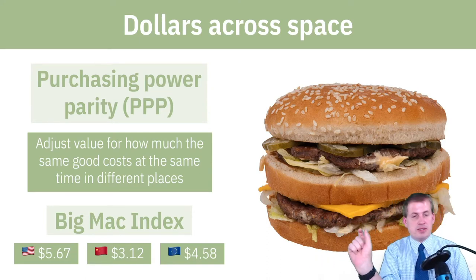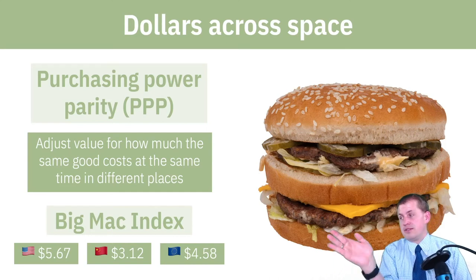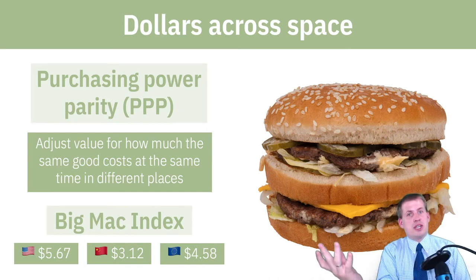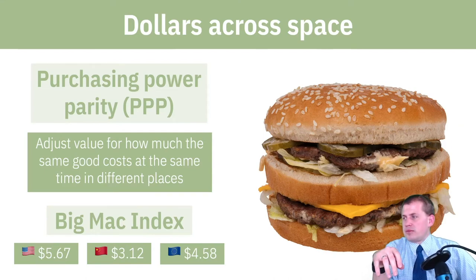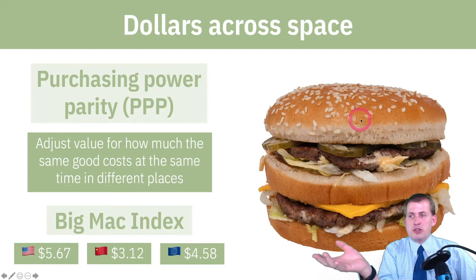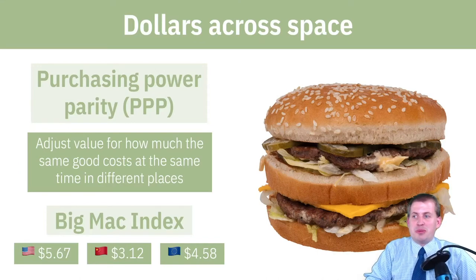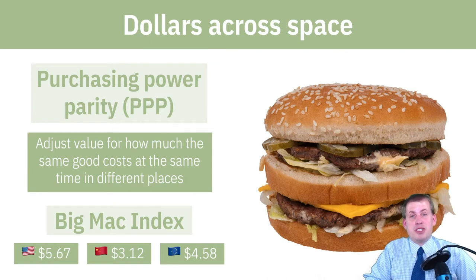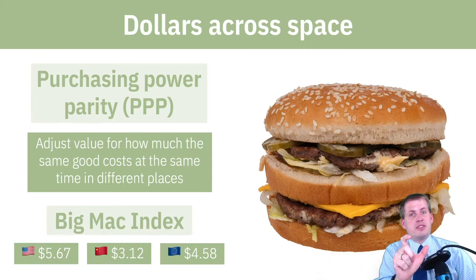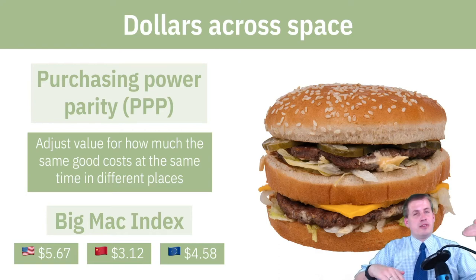In the EU, Big Macs were $4.58 instead of $5.67, because the euro is not as strong as the dollar. The Big Mac Index started as a joke but people can use it as a serious measure. Even if you don't use the official Big Mac Index, if you look up GDP per capita on the World Bank's database, you'll often see a footnote saying 'PPP adjusted,' meaning they've gone through the calculations to account for differences in purchasing power across places.